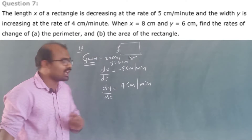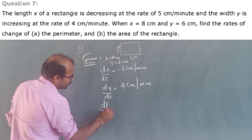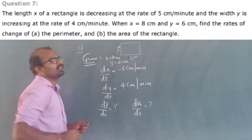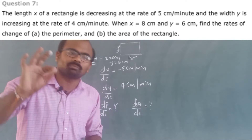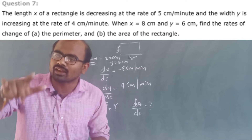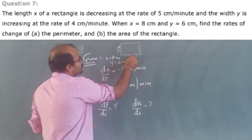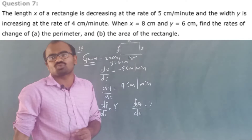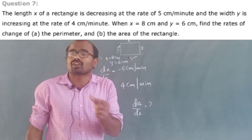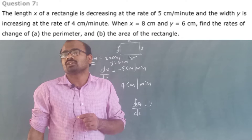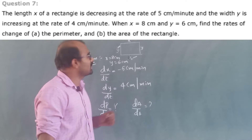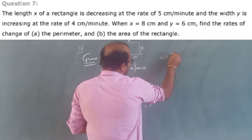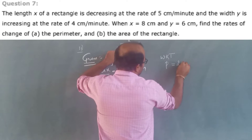We need dp/dt and dA/dt. The perimeter formula for a rectangle is P = 2x + 2y, and the area formula is A = x × y.